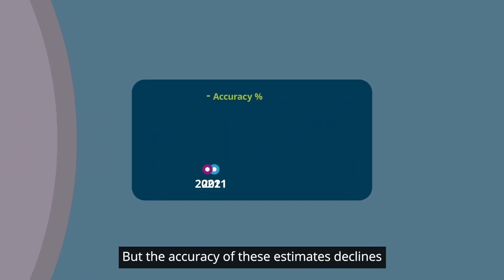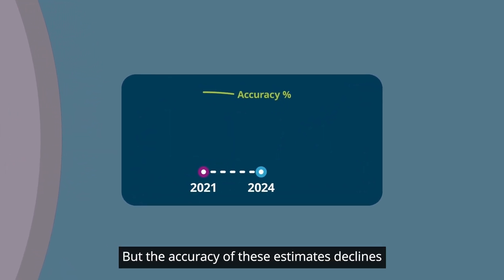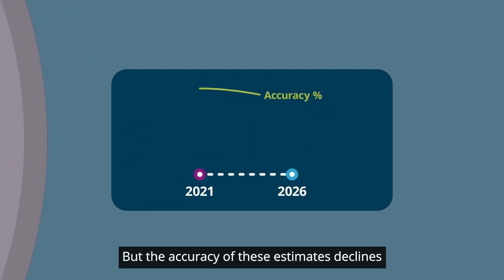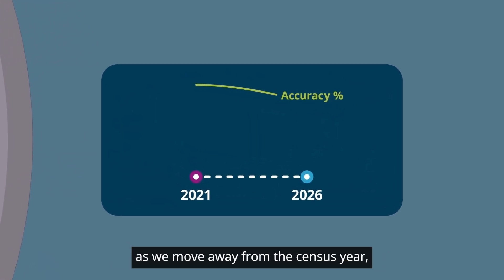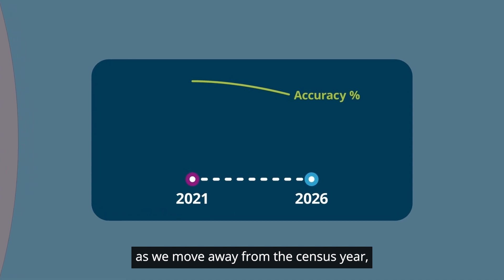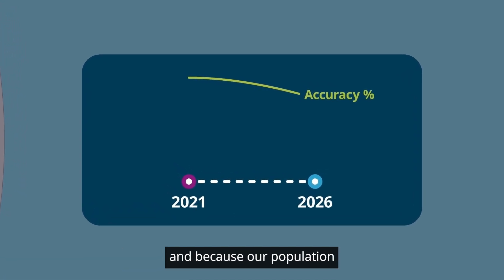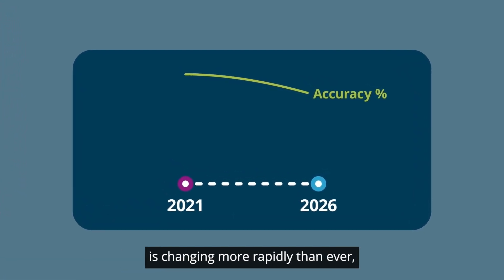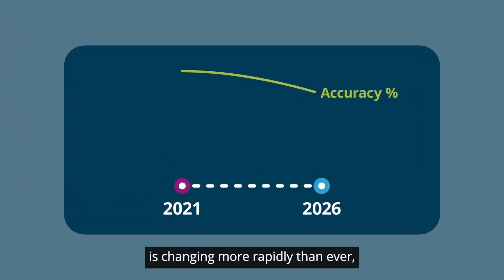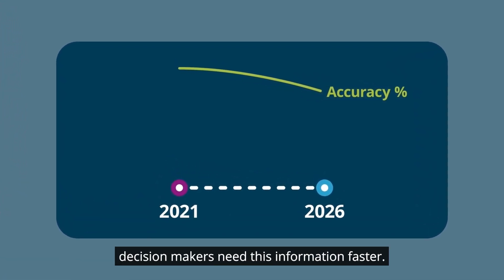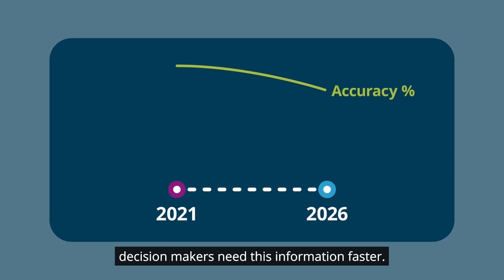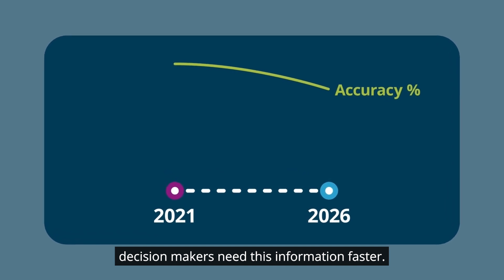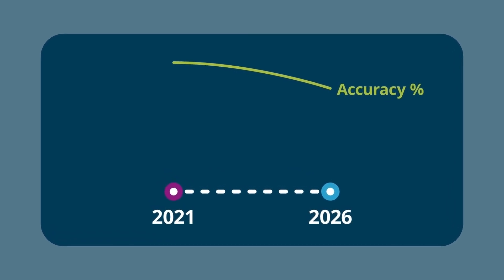But the accuracy of these estimates declines as we move away from the census year. And because our population is changing more rapidly than ever, decision makers need this information faster.